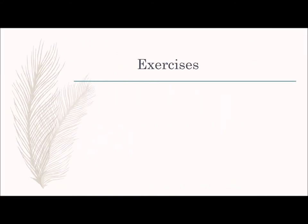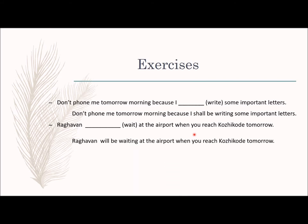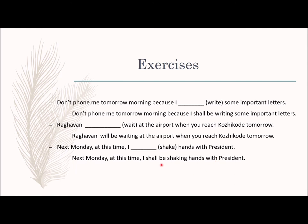More exercises for future continuous tense: 'Raghavan dash at the airport when you reach there tomorrow' — Raghavan will be waiting at the airport. 'Next Monday at this time, I dash hands with the President' — 'I will be shaking hands with the President' or 'I shall be shaking hands with the President.'